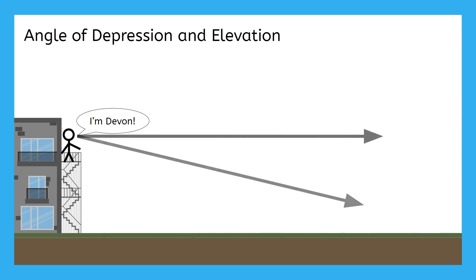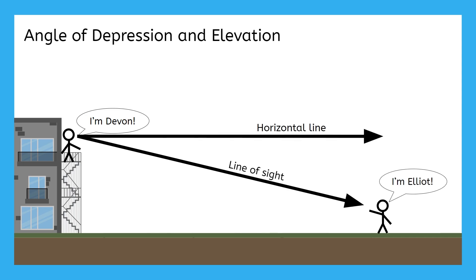he looks slightly down to see his friend Elliot. This horizontal line and Devin's line of sight create an angle called the angle of depression.